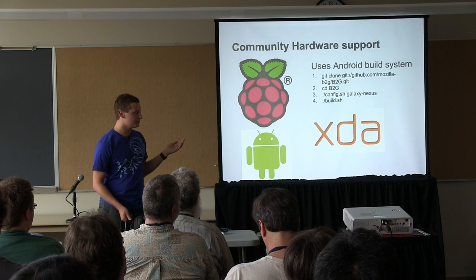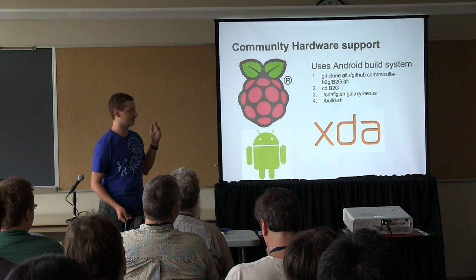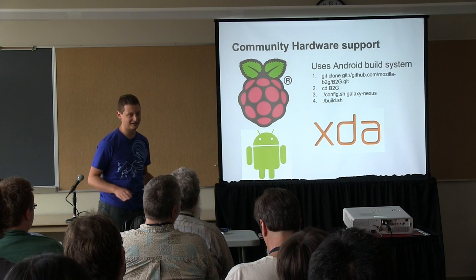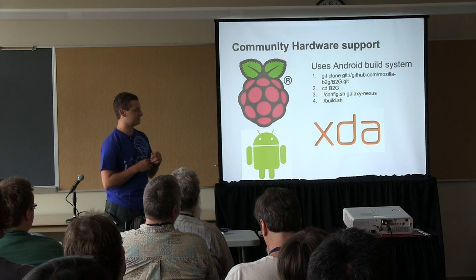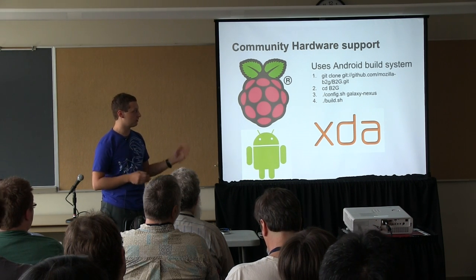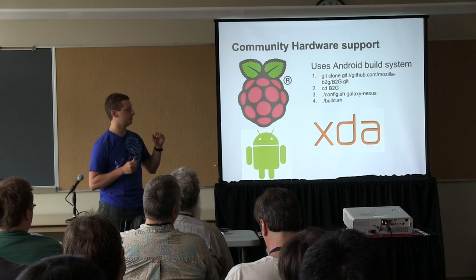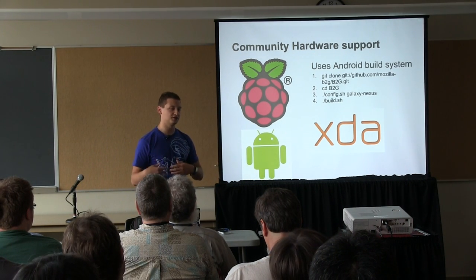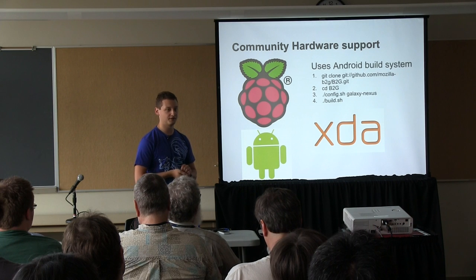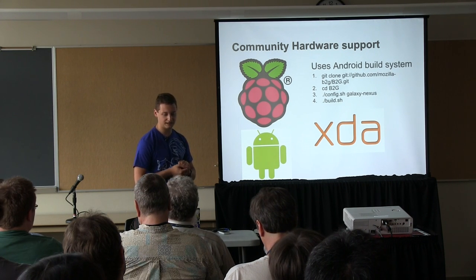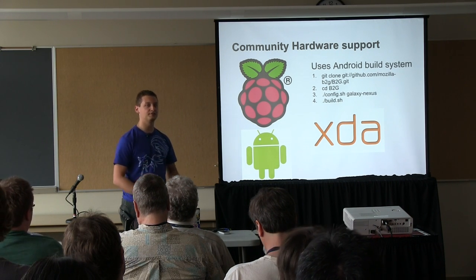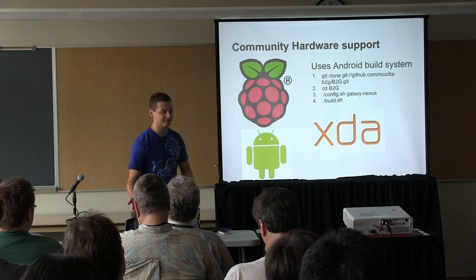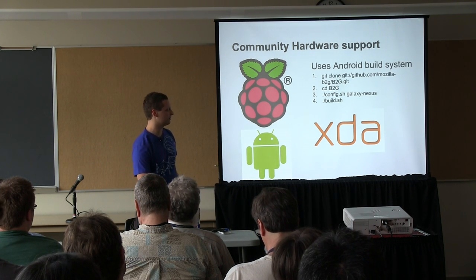Firefox OS uses the Android build system — the underlying part does. There's no more Java in it; we've ripped all that out. You can clone it from GitHub, tell it what device you want to configure, and build it — it will give you an image you can flash on your phone. It's not too difficult, and because of that it's really easy to set up a development environment and do a little hacking if that's what you're interested in.